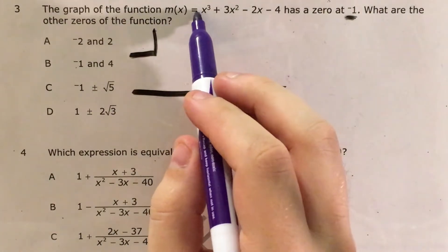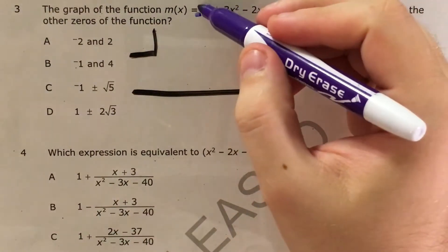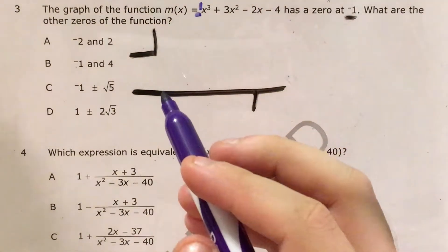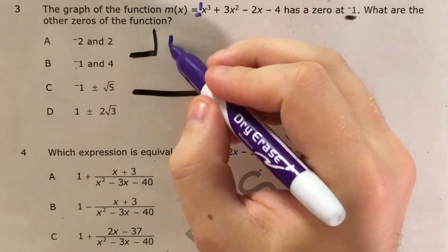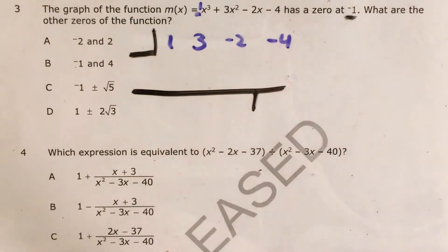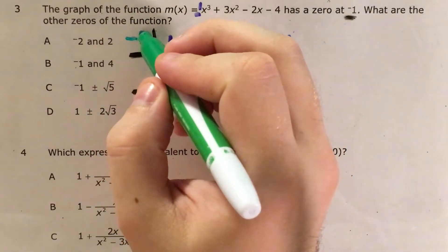Now on this top row, I'm going to write all the coefficients of my polynomial. Even if there's not a coefficient in front of x cubed, I'm going to say that that's one. So that's one, three, negative two, negative four. I'm testing negative one.